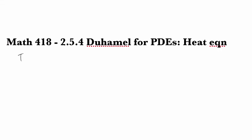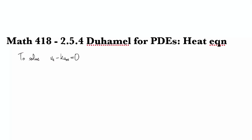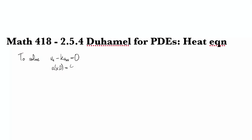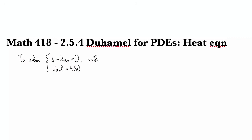Let's apply Duhamel's Principle to solve the heat equation. To solve the Cauchy problem for the heat equation, we'll have u_t minus k u_xx equals zero, with u(x,0) initial condition of phi(x). And so this is going to be on the entire line.